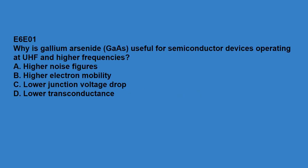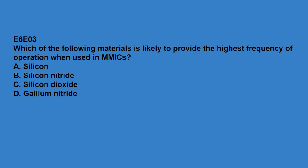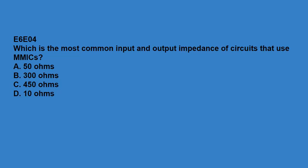E6E covers analog ICs, MMICs, and IC packaging characteristics. E6E01: why is gallium arsenide useful for semiconductor devices operating at UHF and higher frequencies? Because of higher electron mobility. E6E02: which of the following device packages is a through-hole type? DIP. E6E03: which of the following materials is likely to provide the highest frequency of operation when used in MMICs? Gallium nitride. E6E04: which is the most common input and output impedance of circuits that use MMICs? 50 ohms.